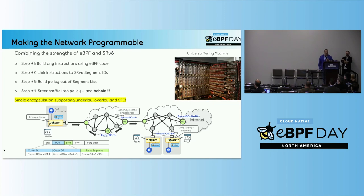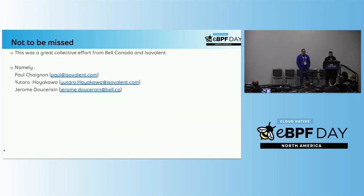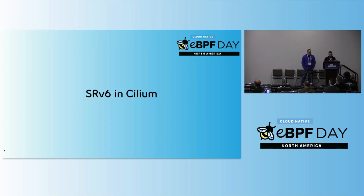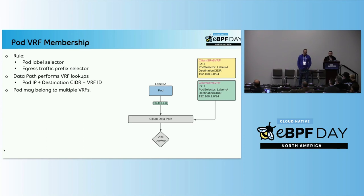That's basically the crash course of why we went with that approach to support our networking requirements. I'll now pass the mic to Louis, who can explain the details of how it's been implemented. My name is Louis, I'm a staff software engineer at Isovalent, and for this part of the talk I'm going to go into detail on how we achieved the POC of a popular SRV6 feature, L3VPN. The first concept we needed to achieve was pod VRF membership.